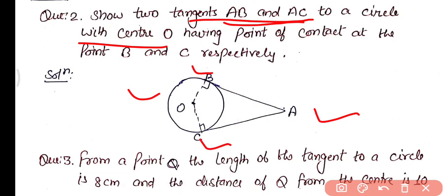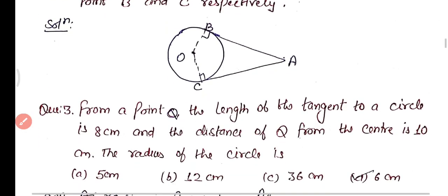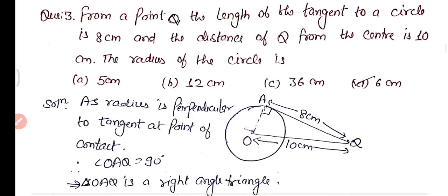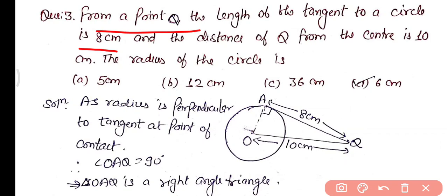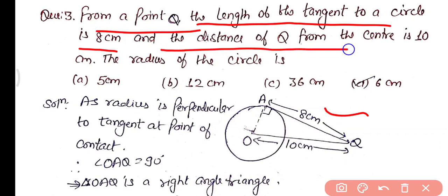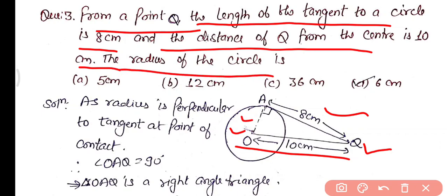Question number three: from a point Q, the length of the tangent to a circle is 8 centimeters. The distance of Q from the center is 10 centimeters. We need to find the radius OA. The four options are: (a) 5 cm, (b) 12 cm, (c) 36 cm, and (d) 6 cm.